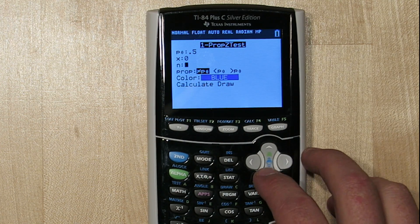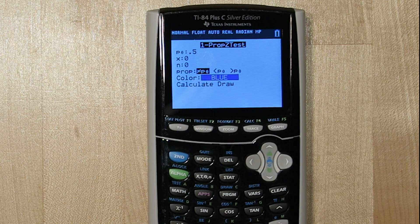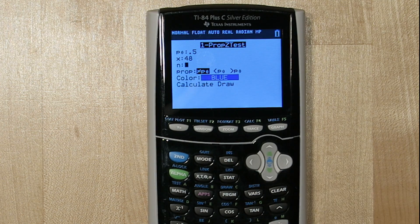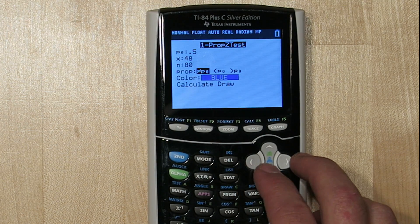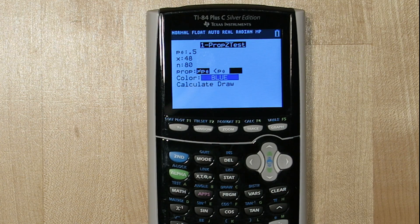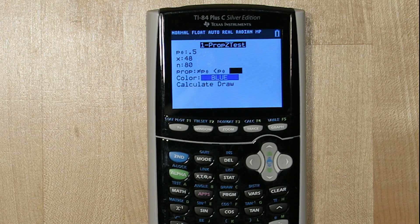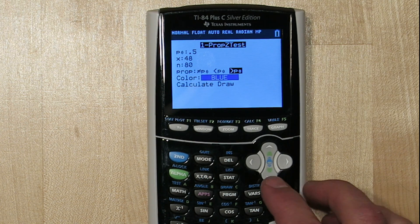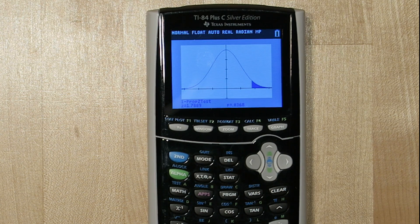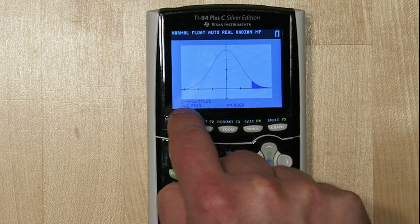x and n are about your sample, so x is the number of successes in your sample. So in this case, how many people in the sample supported the proposal? 48, out of a total of 80. Now down here, you're going to choose whatever direction is from your alternative hypothesis. So since she's interested in a majority, we're going to choose greater than p-sub-0. If you go down and select Draw, it's going to sketch our standardized normal curve with the critical value and the shaded p-value, and it gives you your information down here.